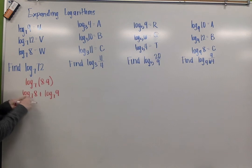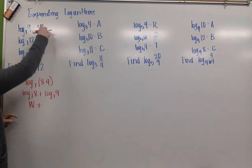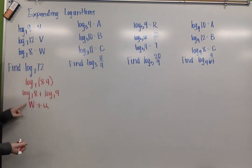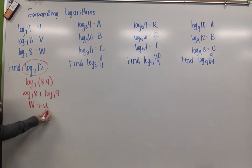I know log base 7 of 8 is w, and I know log base 7 of 9 is u. So I rewrote log base 7 of 72 as w plus u.